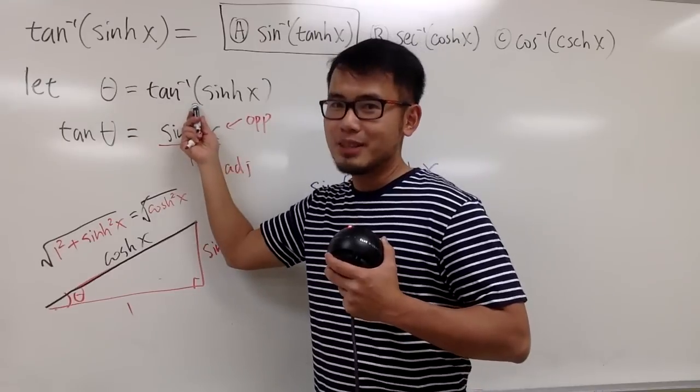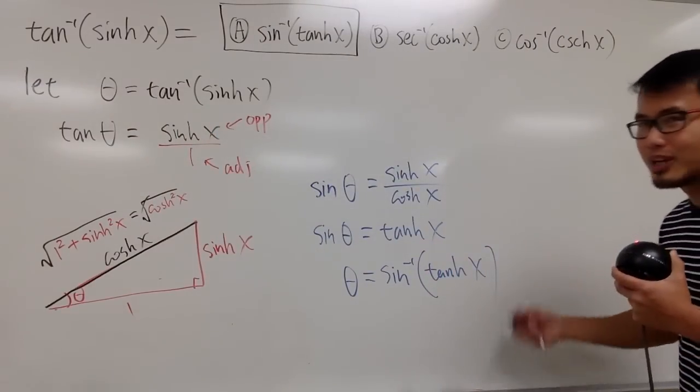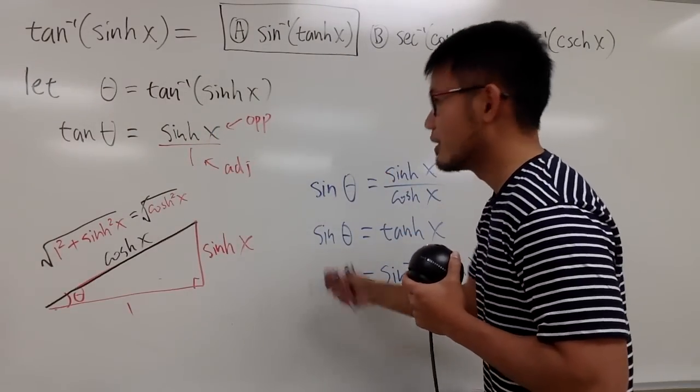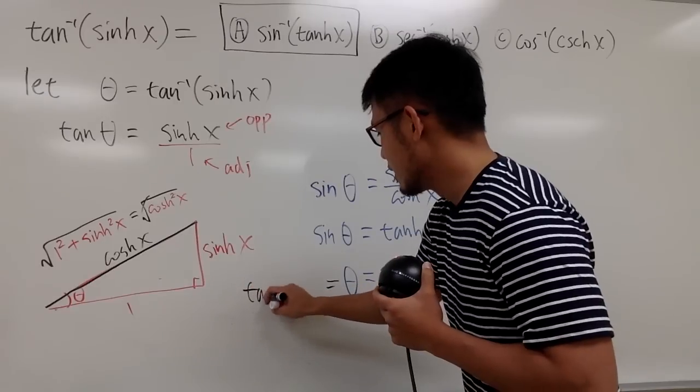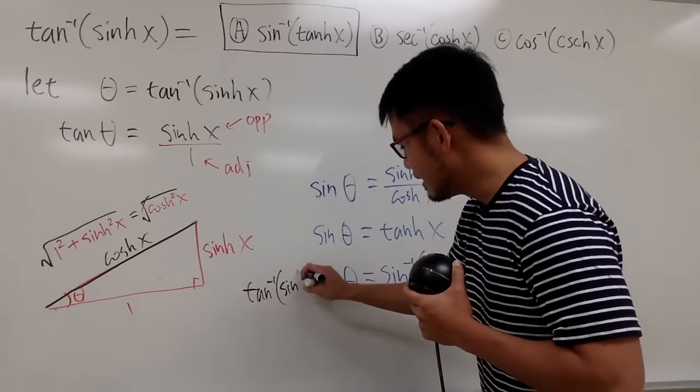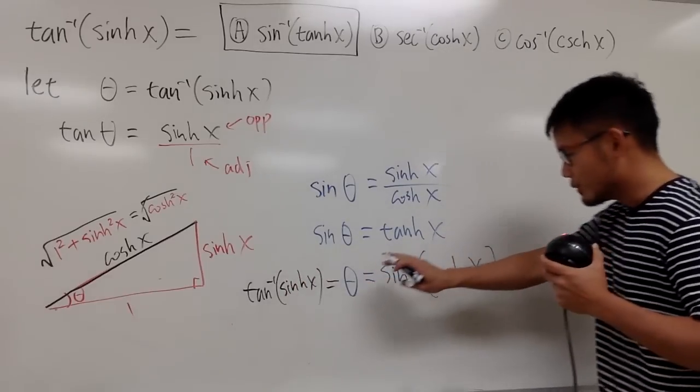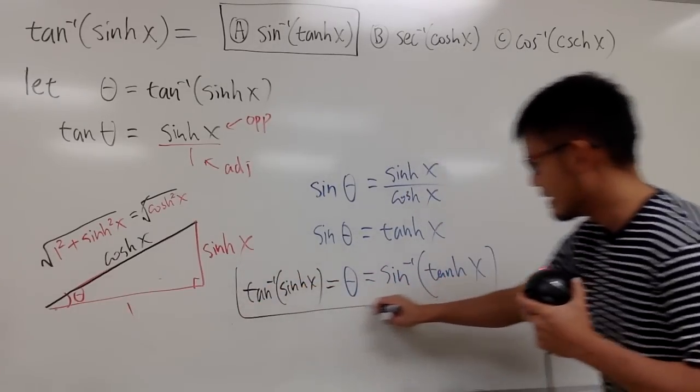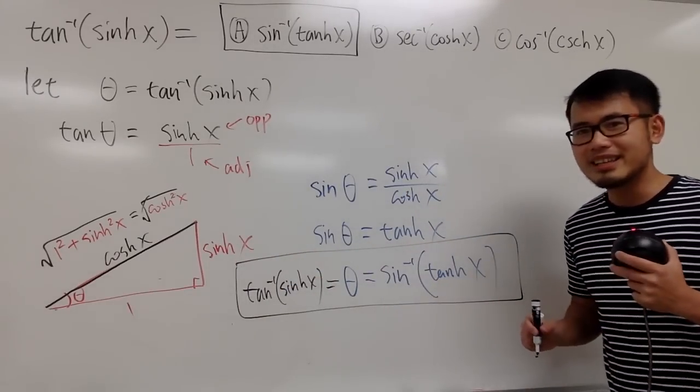This right here is theta. This right here is also theta. So, of course, they have to be equal to each other. So let me just put this down right here. I think it's pretty cool this way. Inverse tangent of sinh of x is equal to this. Aha! This right here is it.